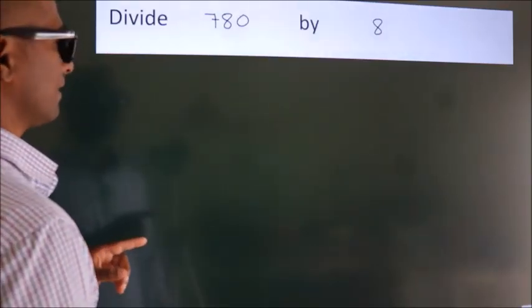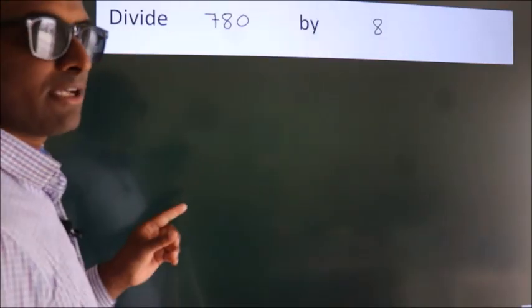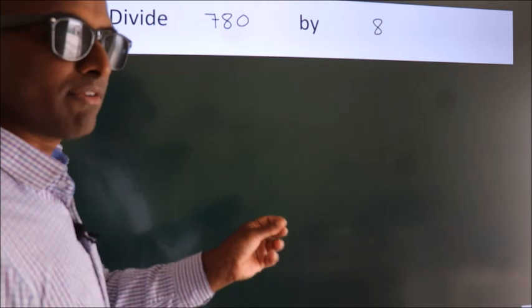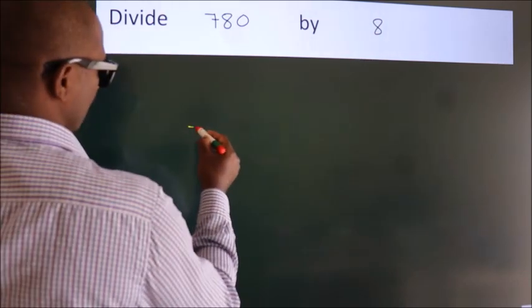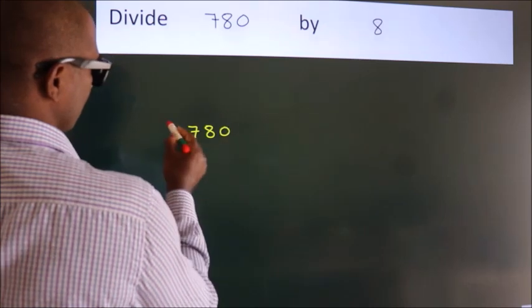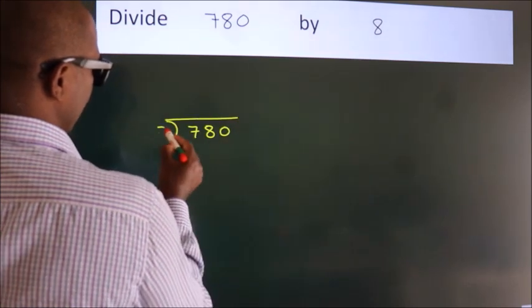Divide 780 by 8. To do this division, we should frame it in this way. 780 here, 8 here.